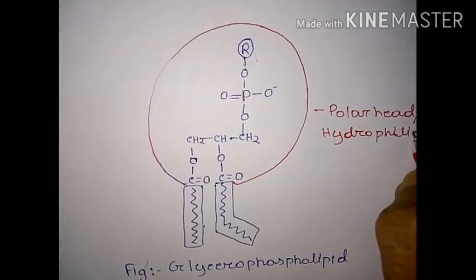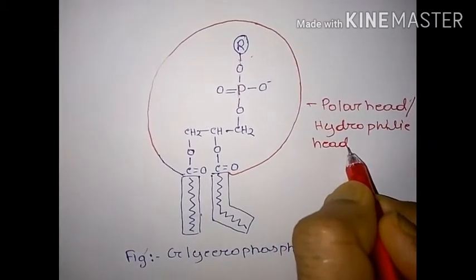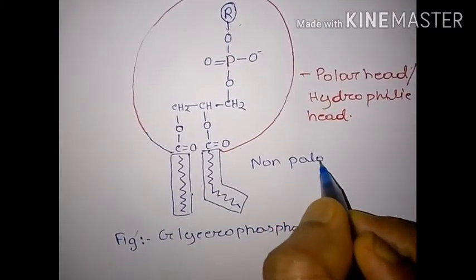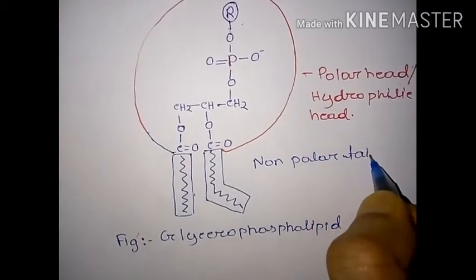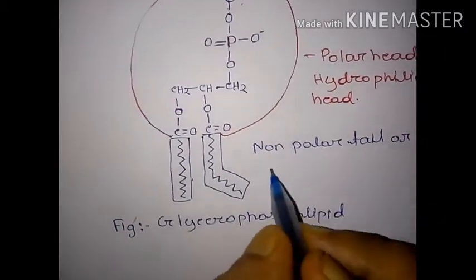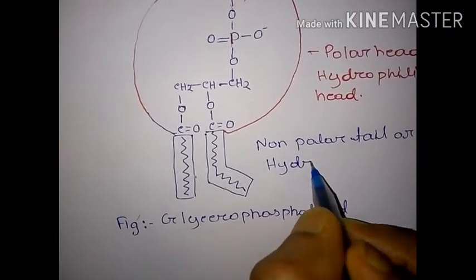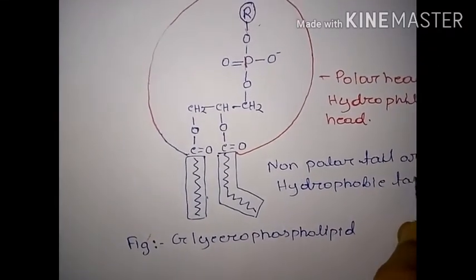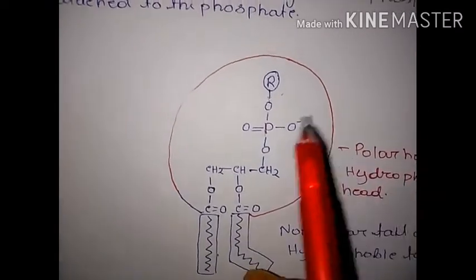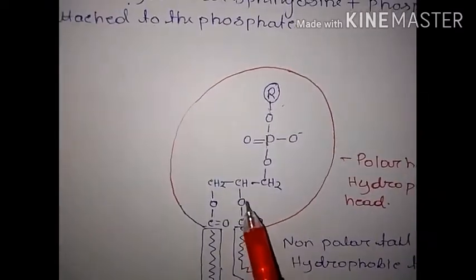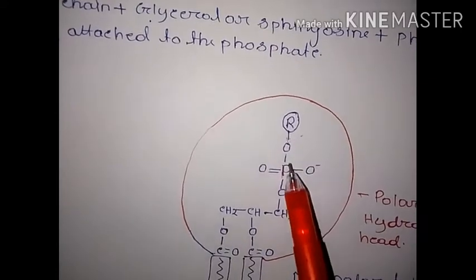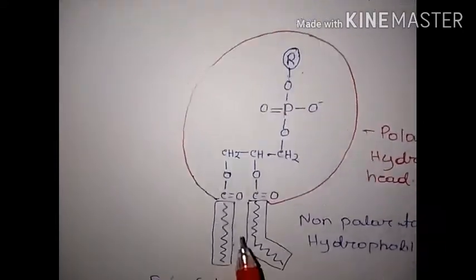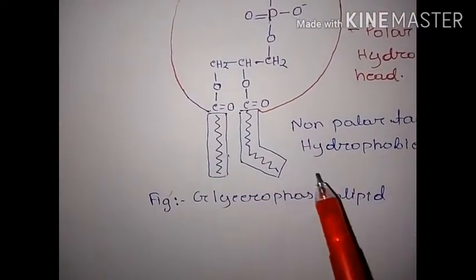This is called the non-polar tail, or hydrophobic tail — the hydrophobic fatty acid tail. So the polar head consists of phosphate, glycerol, and the alcohol attached to the phosphate. On the other side, the fatty acid chain is the hydrophobic tail.